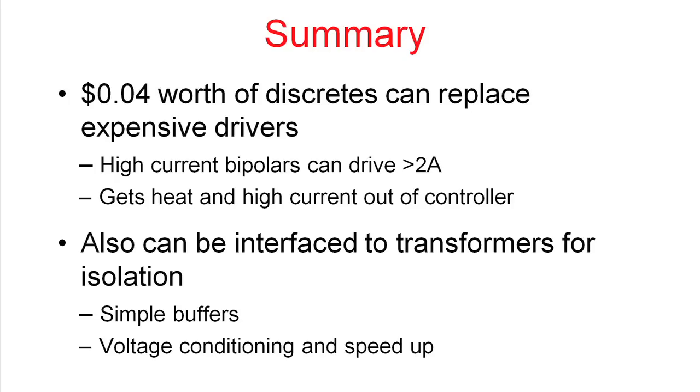So in summary, you can replace 75 cents worth of driver with about 4 cents worth of discrete. And these discrete can provide you with high current drives. They can drive significantly over 2 amps of current. And this has a couple of other advantages. One of them, it gets the heat out of the control IC. The heat that is generated when you drive the gate of the MOSFET is put back into the transistors. The second thing that it does, it gets the high current out of the controller. And many times, this high current from the gate drives is disruptive to the controller IC itself. It can cause variations in the reference and variations in the set point of the power supply, as well as lead to noisy operation.